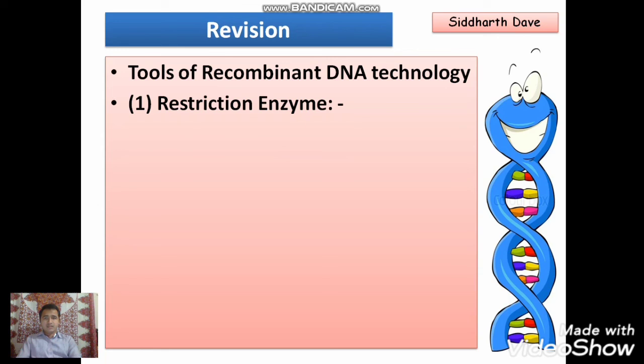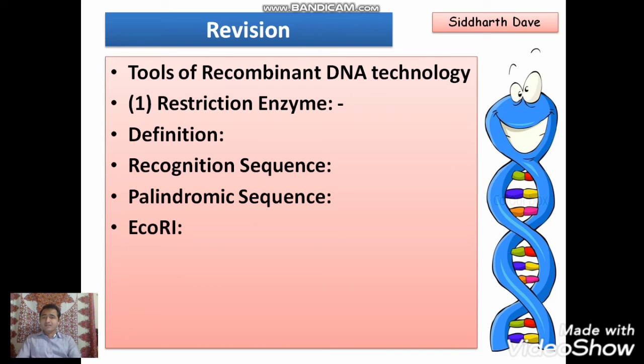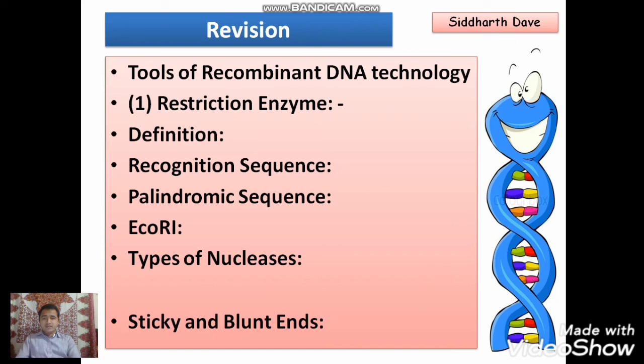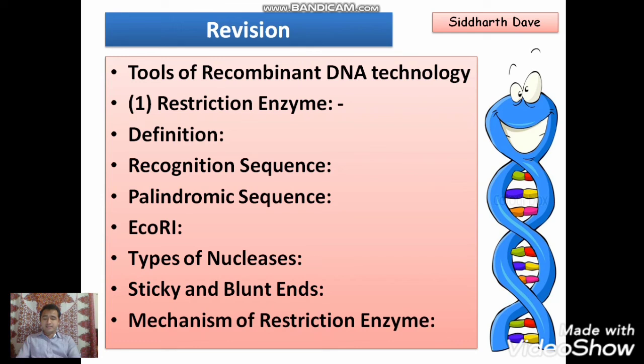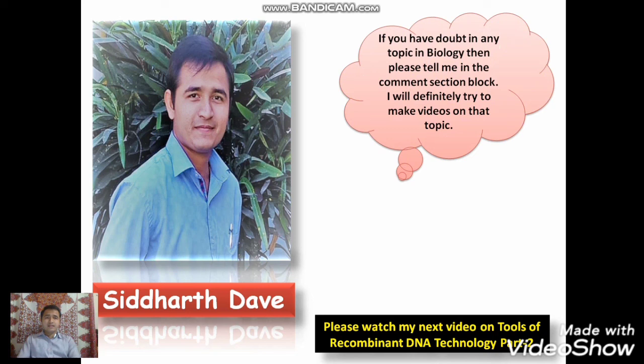Let us revise what we discussed. We have discussed the tools of recombinant DNA technology; in that we discussed the first tool — restriction enzymes — including the definition, recognition sequence, palindromic sequence, how EcoRI is represented, the two types of nucleases, sticky and blunt ends, and the mechanism of restriction enzymes. Friends, if you have any doubt in any topic in the biology subject, please tell me in the comment section and I will definitely try to make videos on that topic.